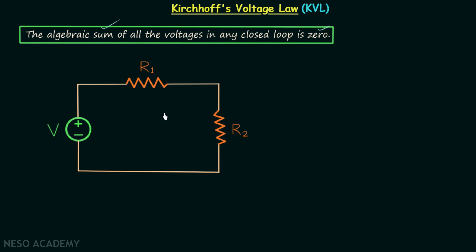For example, here we have a closed loop having three elements. The first one is the voltage source providing voltage V. The second one is a resistor having value R1. The third one is a resistor having value R2. The current in this loop is equal to I, and the voltage is equal to the high potential minus the low potential. Let's say this point is connected to ground, meaning here we will have 0 volt as the potential.